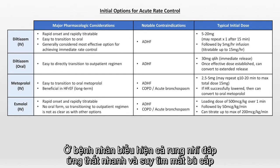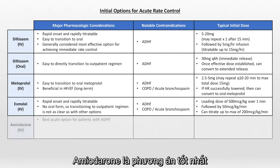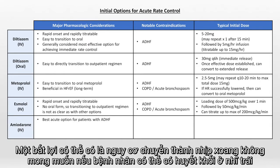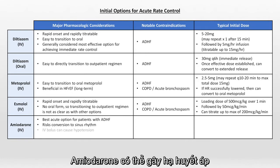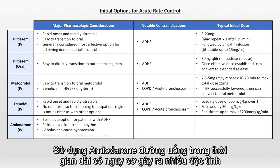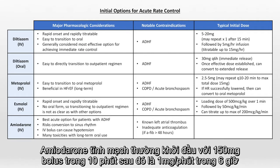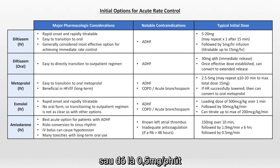For patients presenting with both rapid AFib and acute decompensated heart failure — in whom immediate electrical cardioversion is not necessary — amiodarone is the best choice. One potential disadvantage is that it risks conversion to sinus rhythm, which may not be desirable if the patient might have a left atrial clot. IV amiodarone can cause hypotension, and although not relevant for short-term IV use, long-term oral use carries risk of many toxicities. IV amiodarone is typically initiated as a 150 mg bolus over 10 minutes, followed by 1 mg per minute for 6 hours, then 0.5 mg per minute.